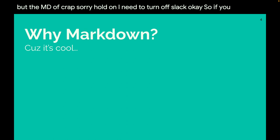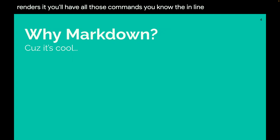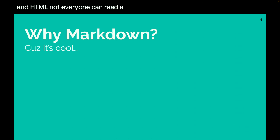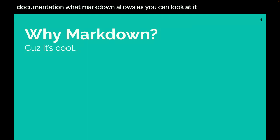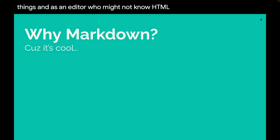If you use Markdown, you can write an MD file, and if you're in something that renders it, you'll have all those commands — the inline formatting, the headings — they'll display as headings. Markdown is like a mix between a text file and HTML. Not everyone can read HTML, so you have a little bit more control because it's human readable. As a writer or technical documentation author, Markdown lets you look at it and control formatting — this is what I want as a heading, this is how I want the link to appear, this is how I want the table aligned. And as an editor who might not know HTML, they can read it and follow along. It gives you a lot more control over your editorial process.